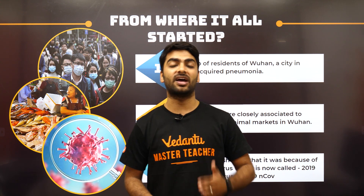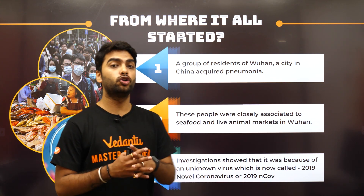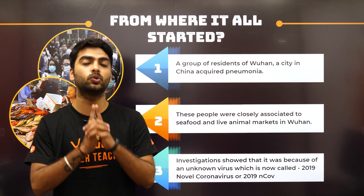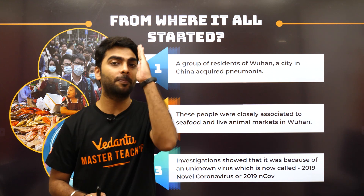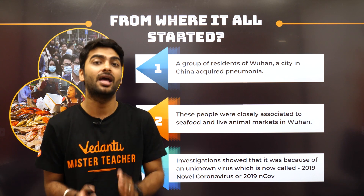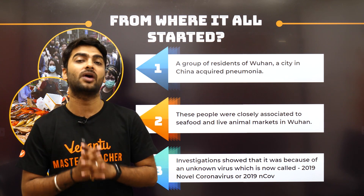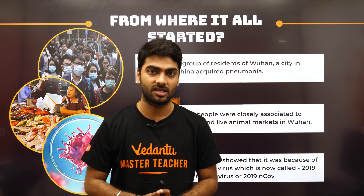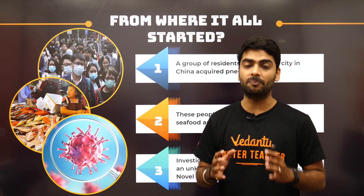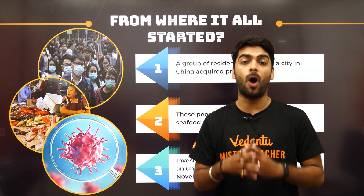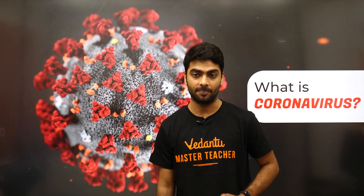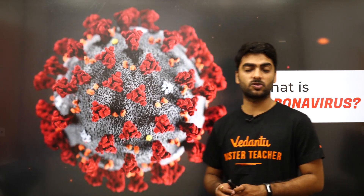The virus was finally named the 2019 Novel Coronavirus, because it was detected on the 31st of December 2019. This is very important — please remember: 31st December 2019, the virus was detected. It was found in this group of people residing in the city of Wuhan in China, who were working with the seafood and live animal market.